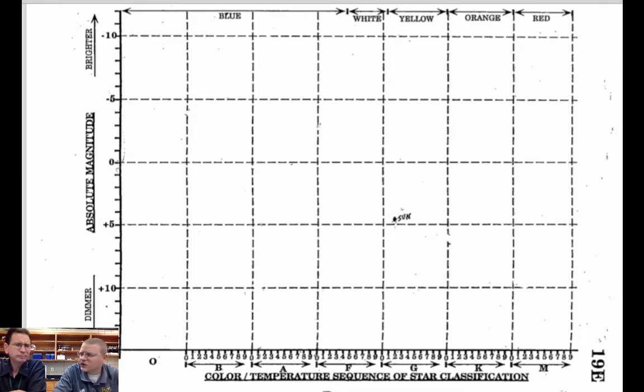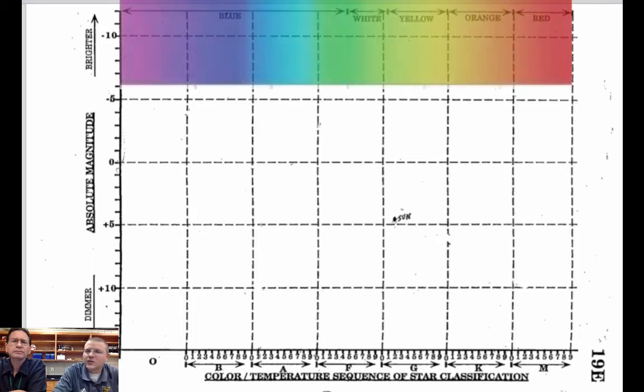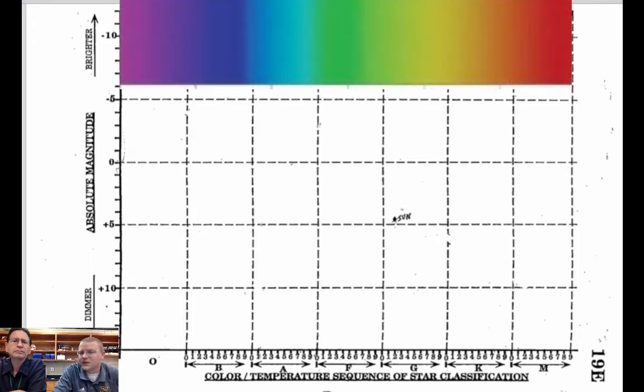So the blue stars, OB stars you can see up at the very top there. O and B stars and A stars even are bluish in color. And when we get towards the KM spectrum we get red oranges and reds.